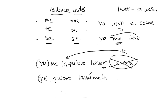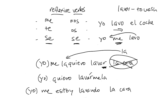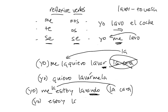Also with the present progressive — the -ing forms — you could do a similar thing. For example, estoy lavando la cara: 'I am washing the face.' Whose face? My face. So you have to say 'I, to myself, am washing the face': yo me estoy lavando la cara. If you want to say 'I'm washing it,' referring to your face, you would have yo me la estoy lavando. Or, since this is an -ing form and we can put things on the end, you could say yo estoy lavándomela. If it were plural, it could be lavándomelos or lavándomelas, depending on what the direct object is.